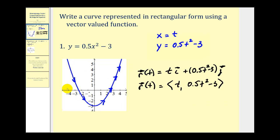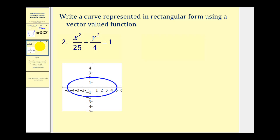Let's take a look at one that's more involved. We want to write the equation x²/25 + y²/4 = 1 as a vector-valued function. First, we should recognize this as an ellipse, as we see sketched here.